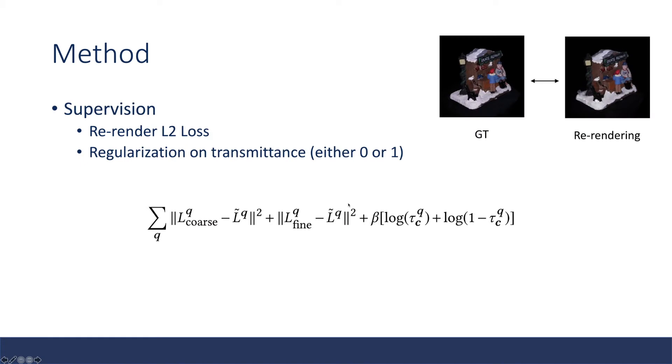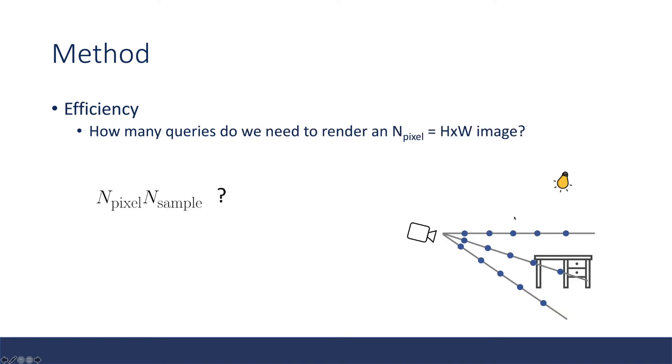The last thing is how we can supervise this method. Basically, it's similar to NERF. It's still using a re-render L2 loss. Similar to NERF, there's a coarse network and a fine network, so there are two losses here. Also, the paper used a regularization on transmittance to encourage the transmittance to be either zero or one. This is the supervision signal.